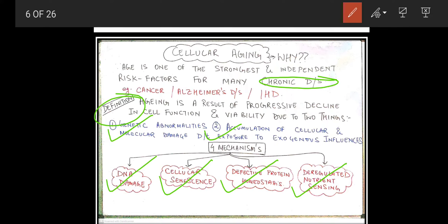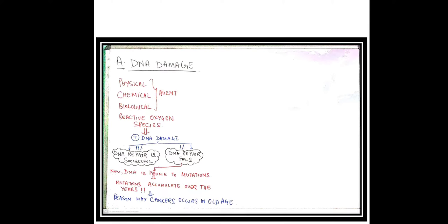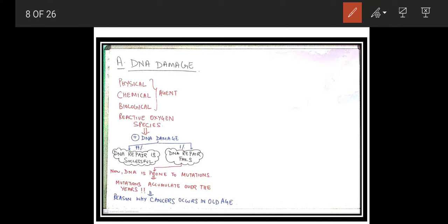First, we are going to discuss DNA damage. The causative agents include physical, chemical, and biological agents, as well as reactive oxygen species. All these will cause DNA damage. Whenever there is DNA damage inside the cell, there are two pathways: the body will attempt DNA repair, and if successful, the cell will continue to divide and everything is fine.